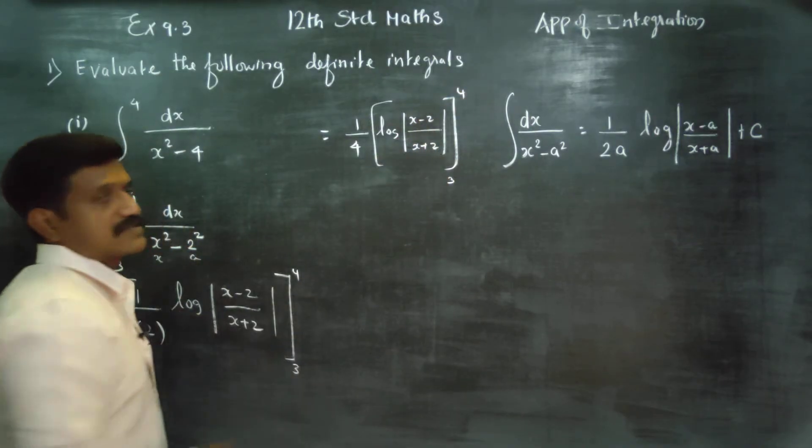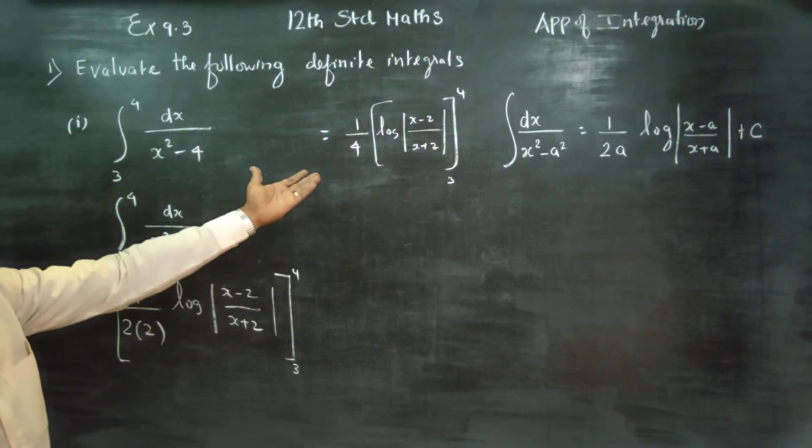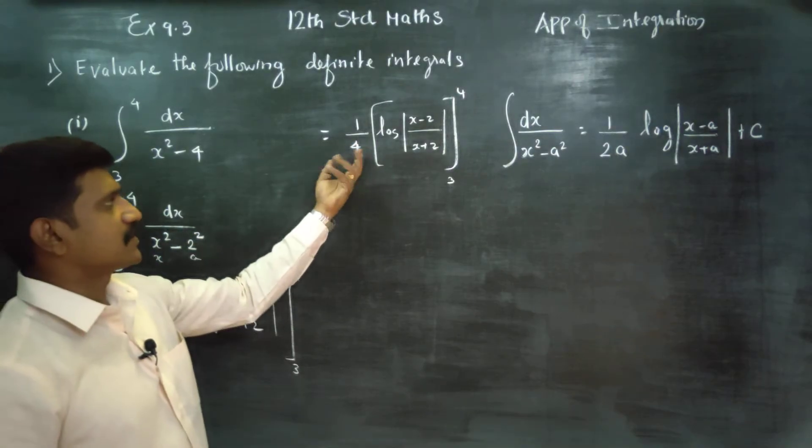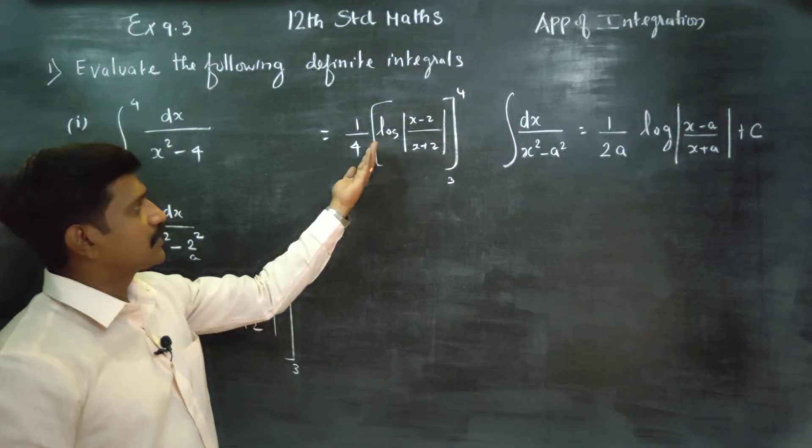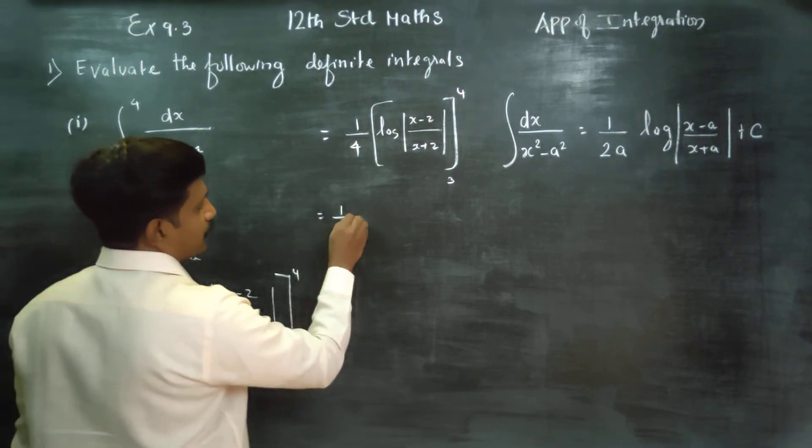The x value is now substituted. Logarithm of constant. Use the logarithm of x minus a limit. Constant is the same. Now, upper limit minus lower limit. 1 by 4.